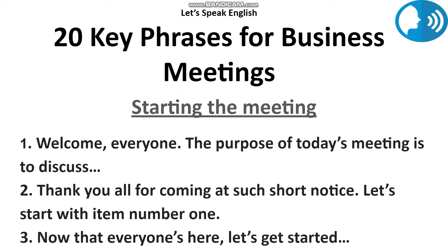You could start with: "Let's start with item number one." And then continue by saying, "We have a number of important matters on the agenda today, so let's start with item number one." In a less formal meeting, you might begin in a more casual manner, for example: "Now that everyone's here, let's get started with today's agenda."